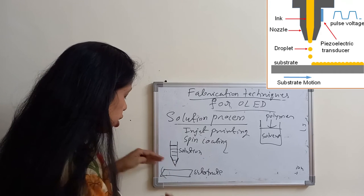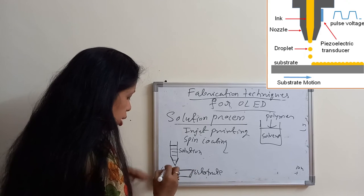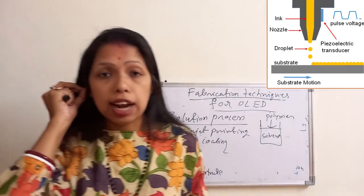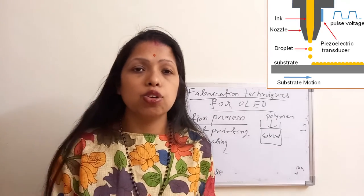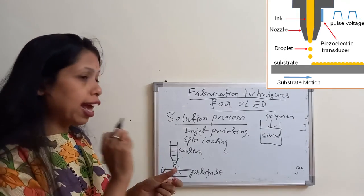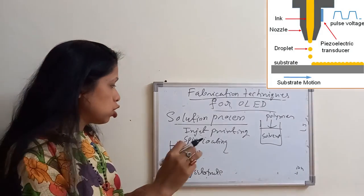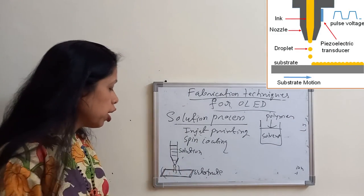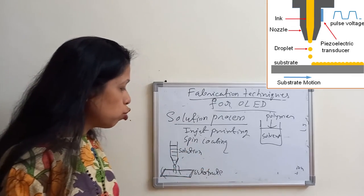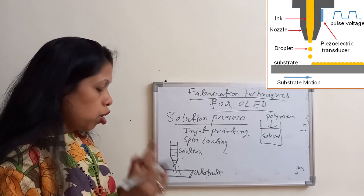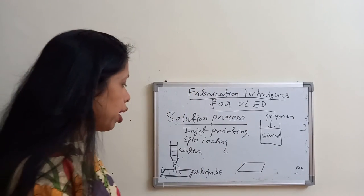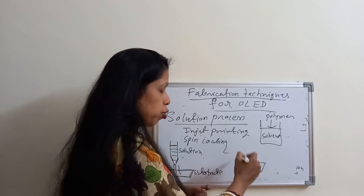In Inkjet Printing, a few drops of solution are collected from the nozzle and deposited on the substrate. This technique is mainly used for large screens — for example, if you want to design a large computer screen or TV screen, Inkjet Printing is used because it works like a spray nozzle that emits solution and deposits it on the substrate.